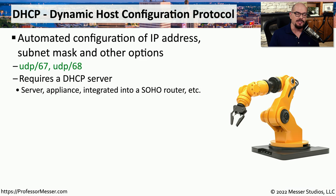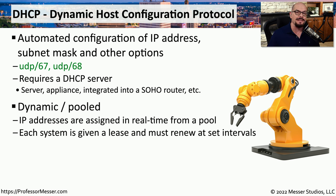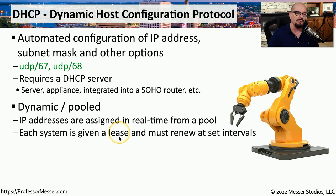If you've ever used your mobile device on a Wi-Fi network at a coffee shop, you've automatically received an IP address using the Dynamic Host Configuration Protocol, or DHCP. The well-known ports for DHCP are UDP port 67 and UDP port 68. You need a DHCP server to assign IP addresses, but that functionality is commonly built into routers and wireless access points. The DHCP server has a large pool of IP addresses assigned in real time. DHCP uses a leasing system, so when a lease expires and you're no longer on the network, that IP address goes back into the pool for someone else to use.